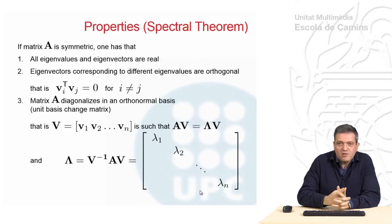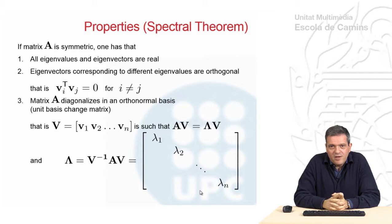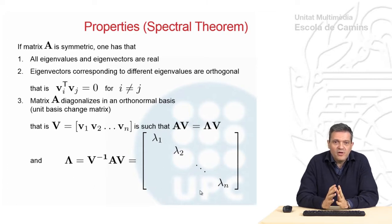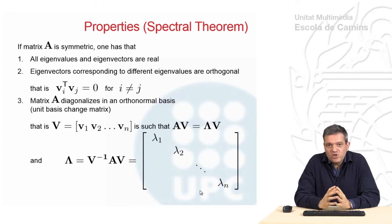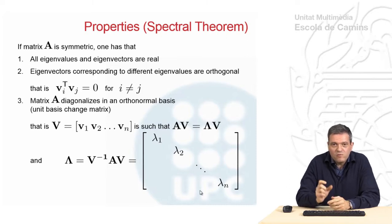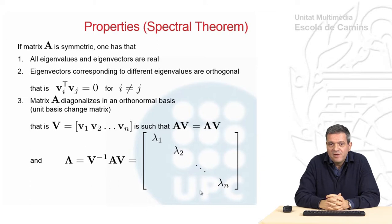The solution of this eigenvalue problem allows us to characterize the matrix A in a different way, which is very relevant because it tells us how to, for instance, diagonalize this matrix. Particularly, you collect all the eigenvectors Vi in a matrix, capital V. This matrix allows you to change the basis and reach a diagonal form of matrix A, which we call lambda, which collects all the eigenvalues lambda in a diagonal. This is the expression you see there.